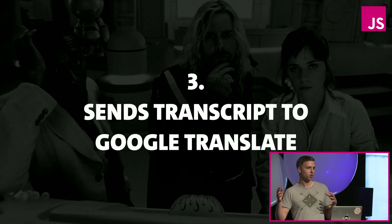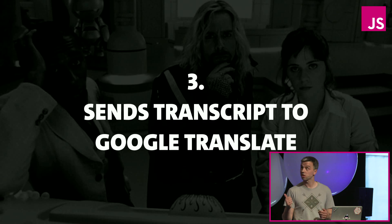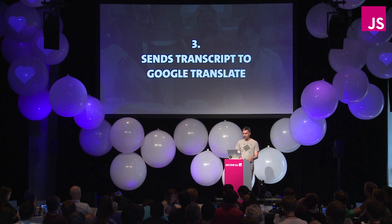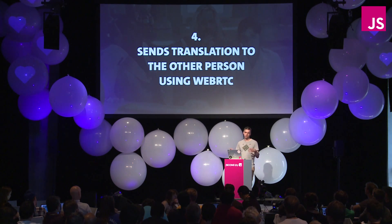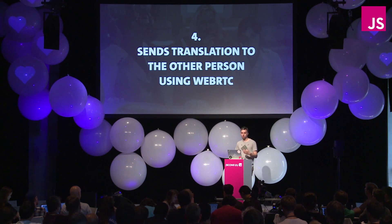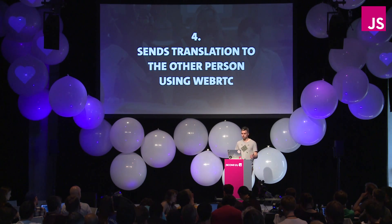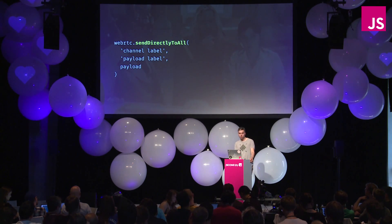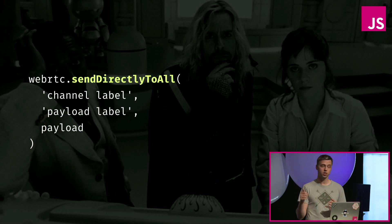The next step is that speech recognition gives us a transcript of what you just said, so we need to send it to Google Translate to actually translate it — done using a plain Ajax call. Once you have the original transcript and its translation, you can send it to the other person. The cool thing is that we use WebRTC data channels for that, so you don't need any servers. You have one method — send directly to all — where you specify the channel name, payload name, and the data itself.